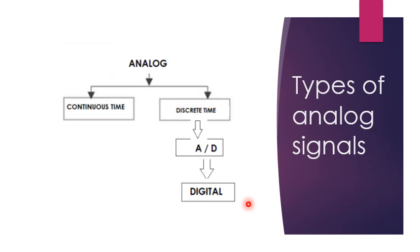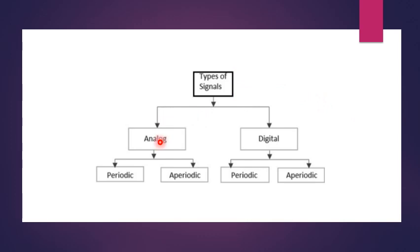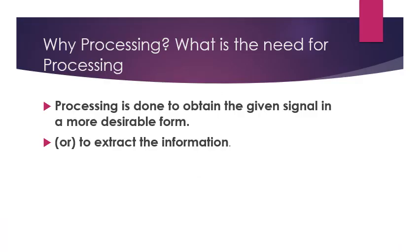Why do we study signals? Because signals convey information, and it is information that drives the whole world — transmission, reception, and absorption. The types of signals are analog and digital. Analog signals can be periodic or aperiodic, and digital signals can also be classified as periodic and aperiodic.